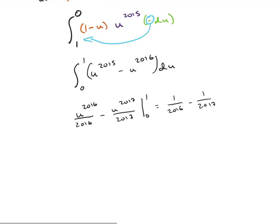But if we want to get it into one fraction, we could also do that. So I could do 2017 minus 2016, divided by 2016 times 2017. So this is also going to be equal to 1 over 2016 times 2017.